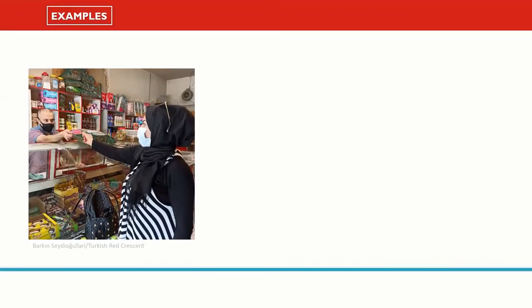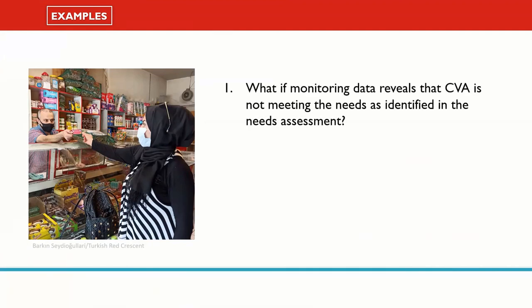What if monitoring data reveals that CVA is not meeting the needs as identified in the needs assessment and is instead meeting other needs as defined by the recipient? In this case, try to determine if this is because the initial needs assessment wasn't accurate, or if the needs have since changed, or possibly a combination. Consider what this means in terms of appropriateness and sufficiency of the assistance provided. As a course of action, you may choose to revisit the needs assessment and response analysis to see if they need to be redone.